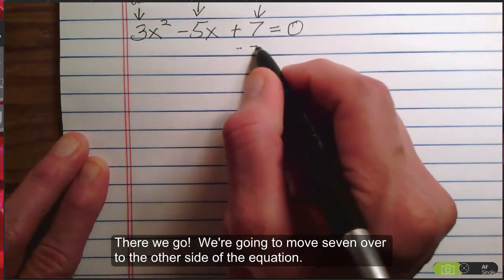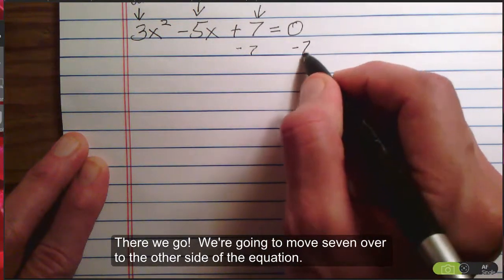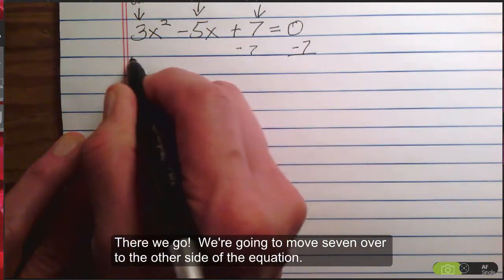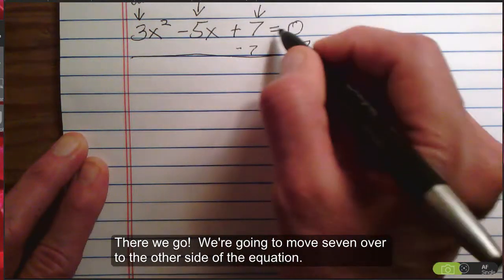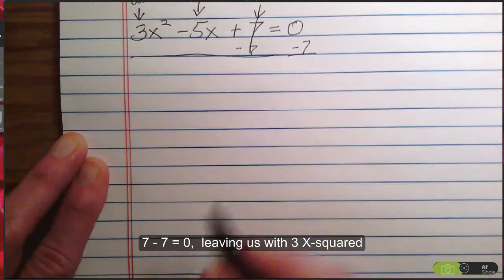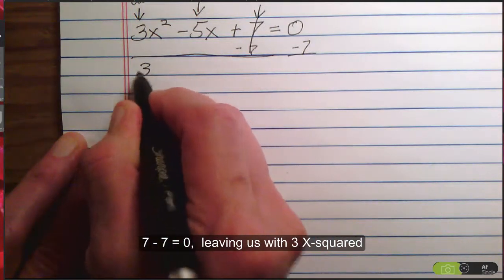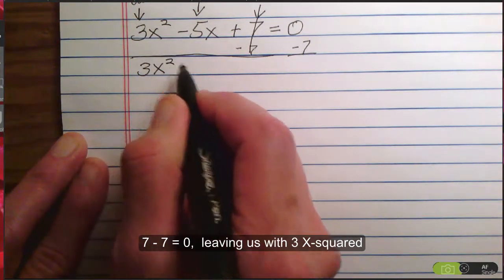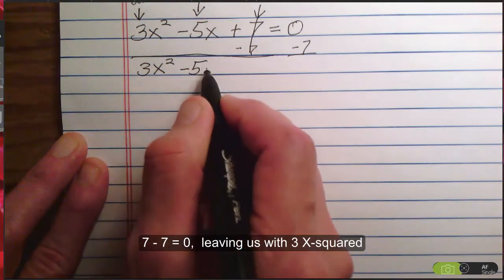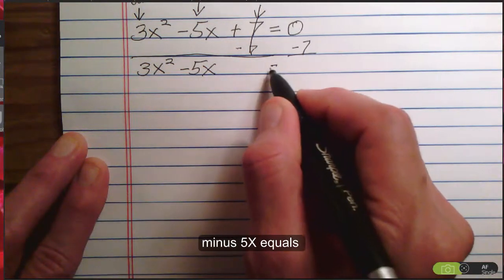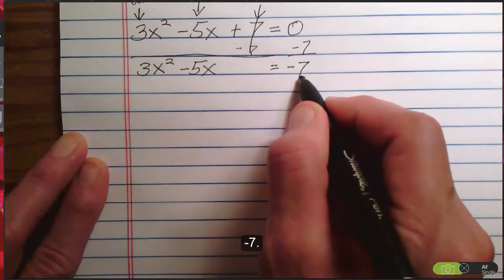All right, I'm going to move 7 over to the other side of the equation. 7 - 7 is 0, leaving us with 3x² - 5x = -7.